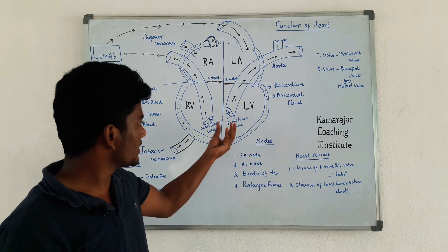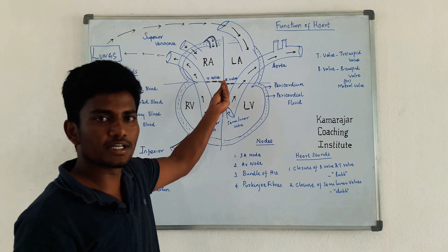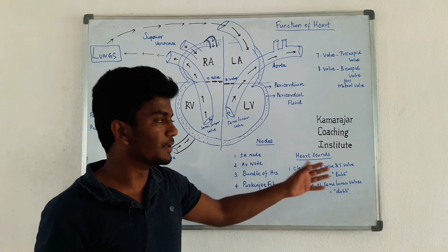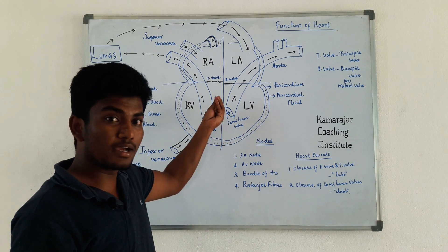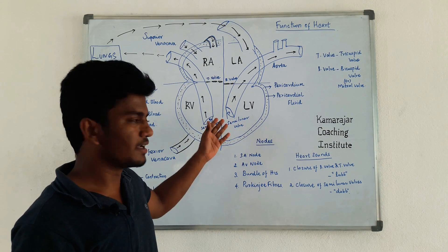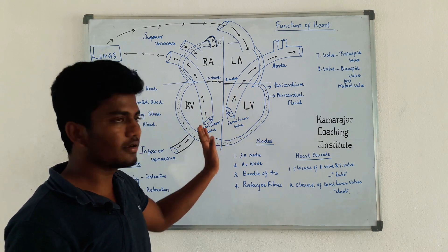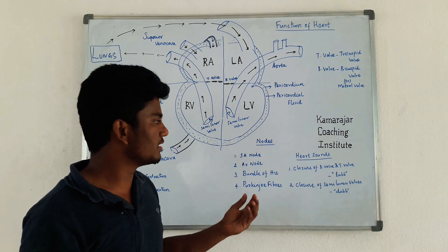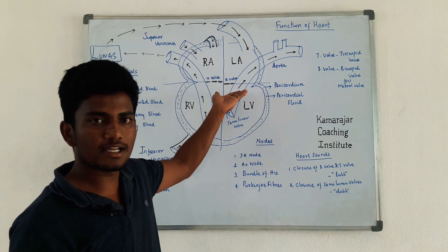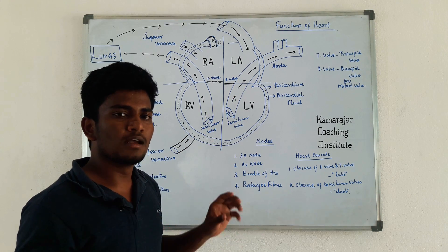When the ventricle contracts, the two valves — the bicuspid and tricuspid valves — are closed, producing the 'lub' sound. That is a louder noise. During relaxation, the semi-lunar valves close, producing the 'dub' sound. So closure of the bicuspid and tricuspid valves gives 'lub', and closure of the semi-lunar valves gives 'dub'.